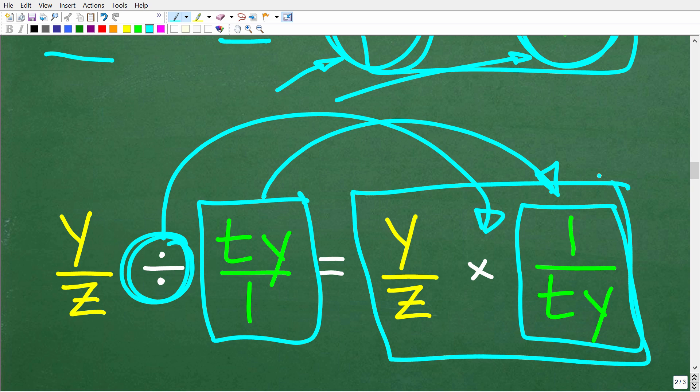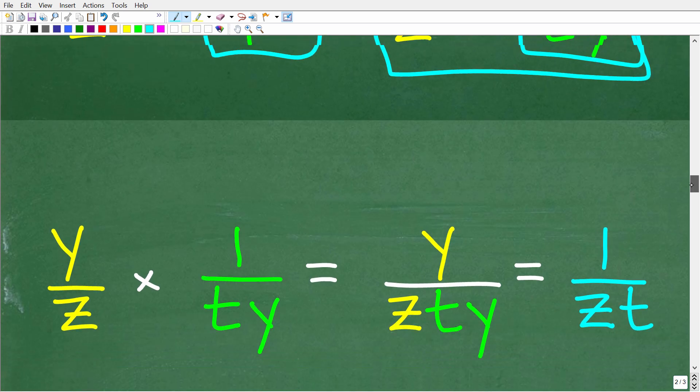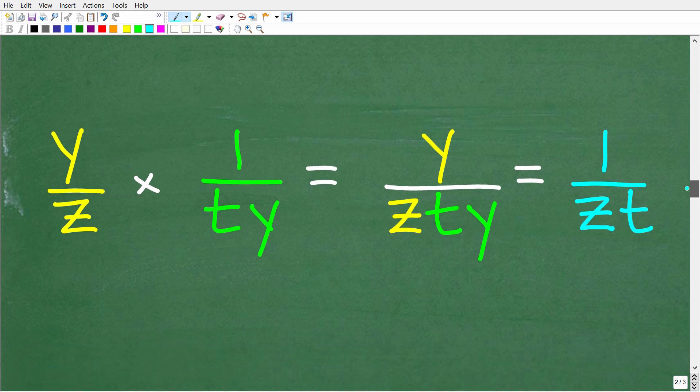Alright, so now we're going to multiply these two fractions. And this is very easy. So how do we multiply fractions? All we have to do is multiply the respective numerators and denominators. So y times one is y. And then z times t times y is z ty.